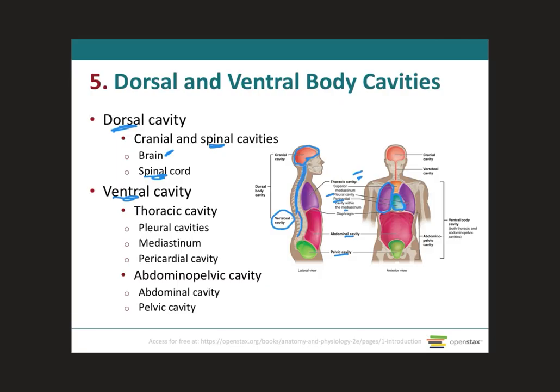In addition to the pleural and pericardial cavities, we have a third cavity called the mediastinum, located in the middle. It houses the heart, important blood vessels, and other organs like the thymus, the esophagus, the trachea, and the major blood vessels at the base and top of the heart.